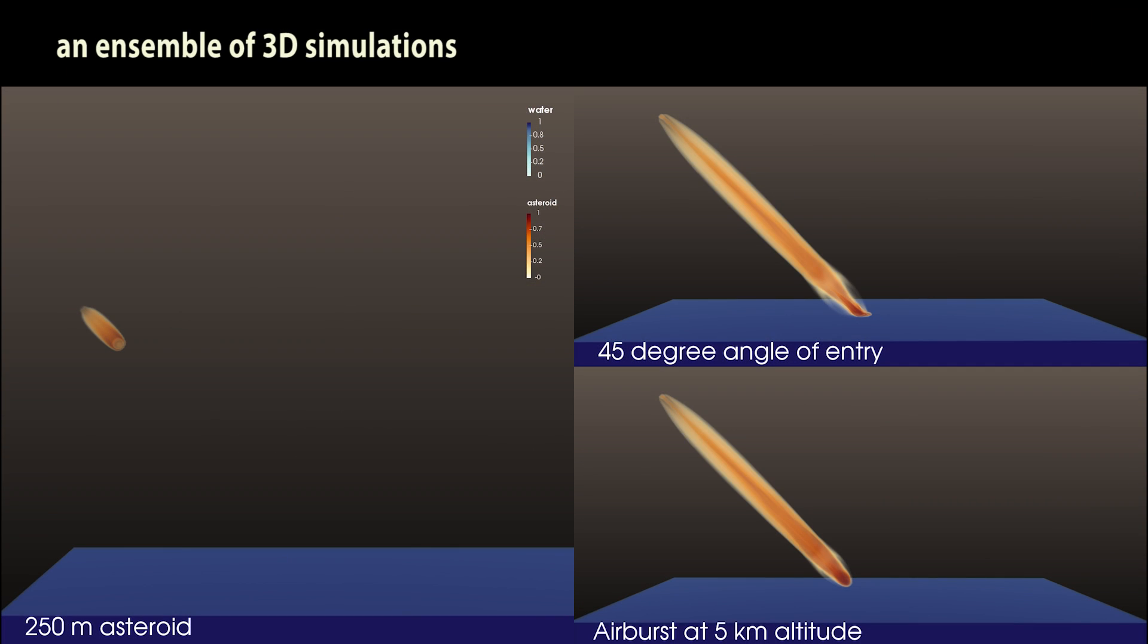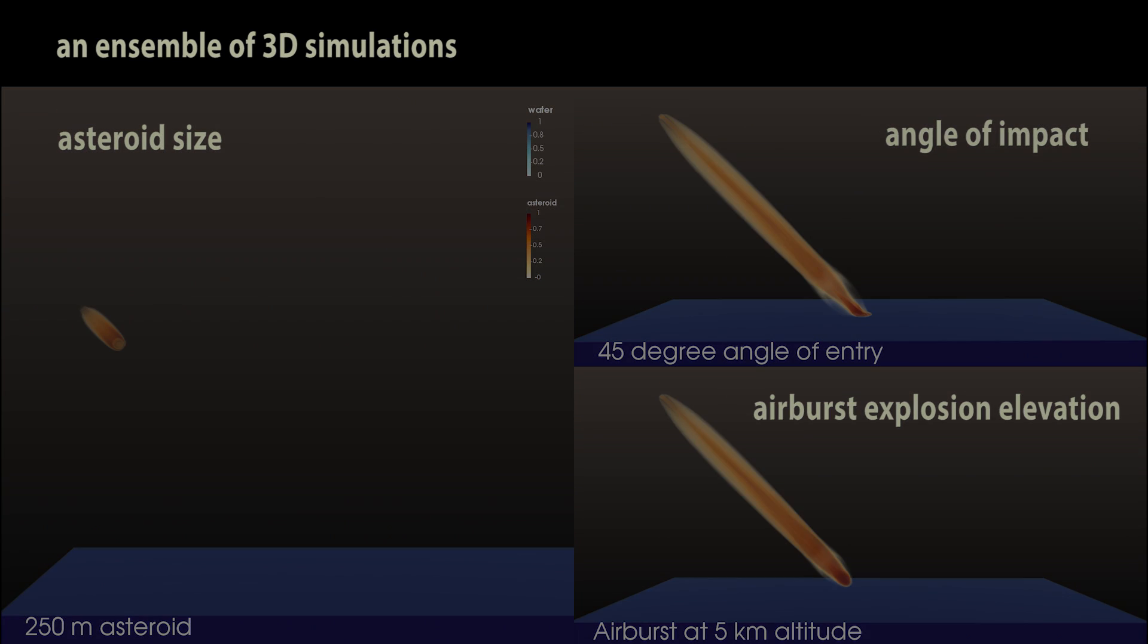Los Alamos scientists ran an ensemble of 3D simulations, varying the asteroid's size, the angle of impact, and whether or not the asteroid exploded in an airburst before impact. The height of this airburst was also varied.